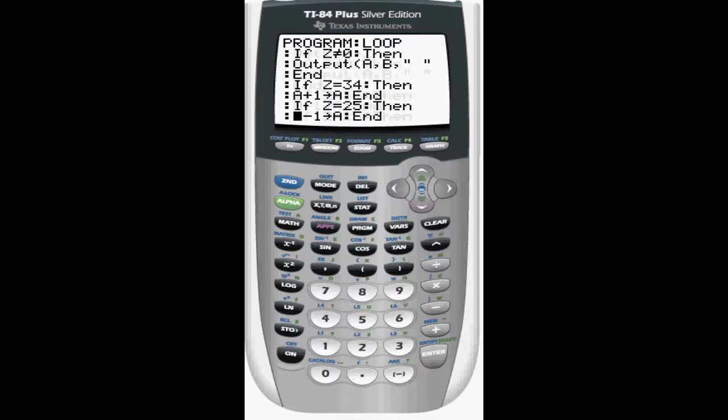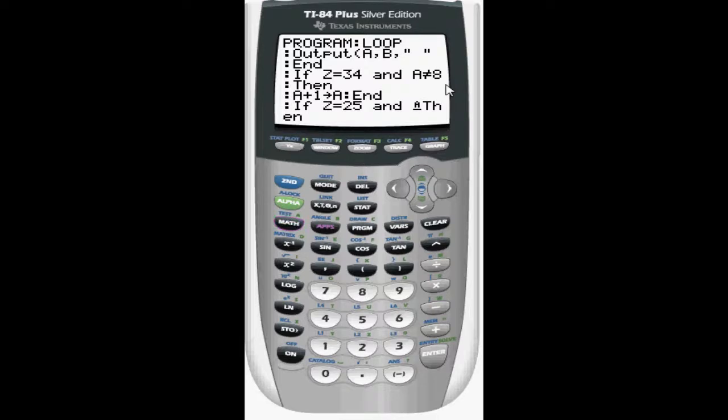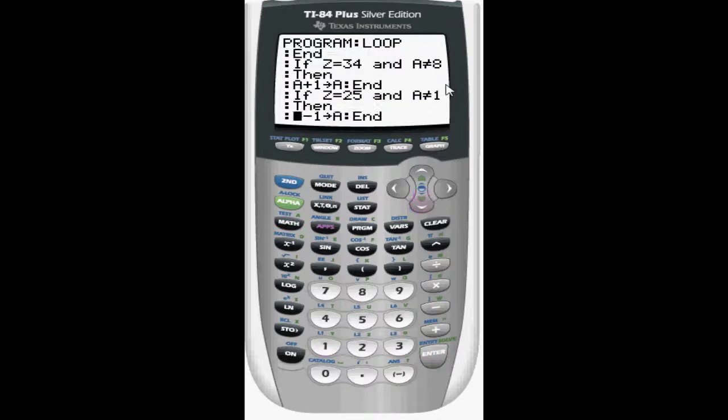Now to fix that, you're just going to add a statement to this within the if statement. So you're going to do if z equals 34, which is the down arrow, and A does not equal 8. So meaning as long as the y value is 1 through 7, I'm allowed to move down. But if I'm at the maximum value of 8, I'm not allowed to move down. And I'm going to do the same thing for moving up. So if z equals 25 and A does not equal 1, so again as long as I'm within 2 through 8, I'm allowed to move up. Then I won't get that domain error.